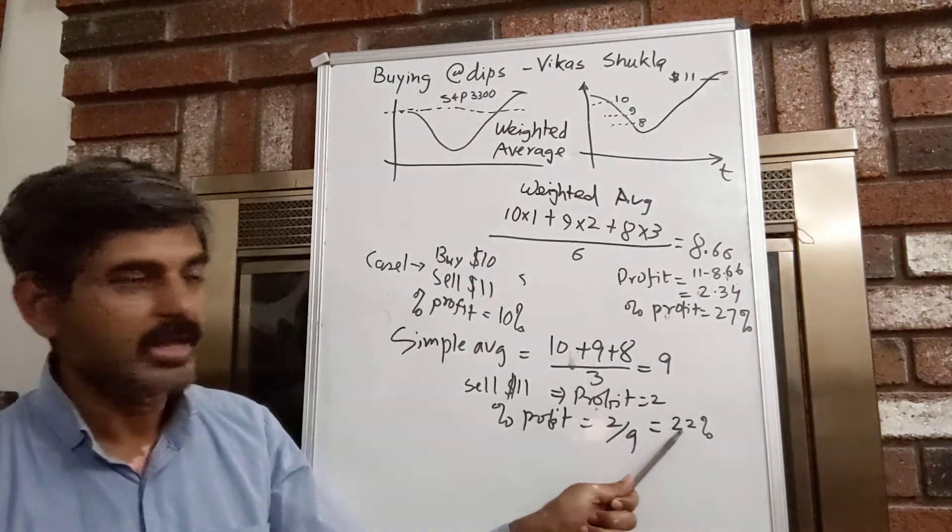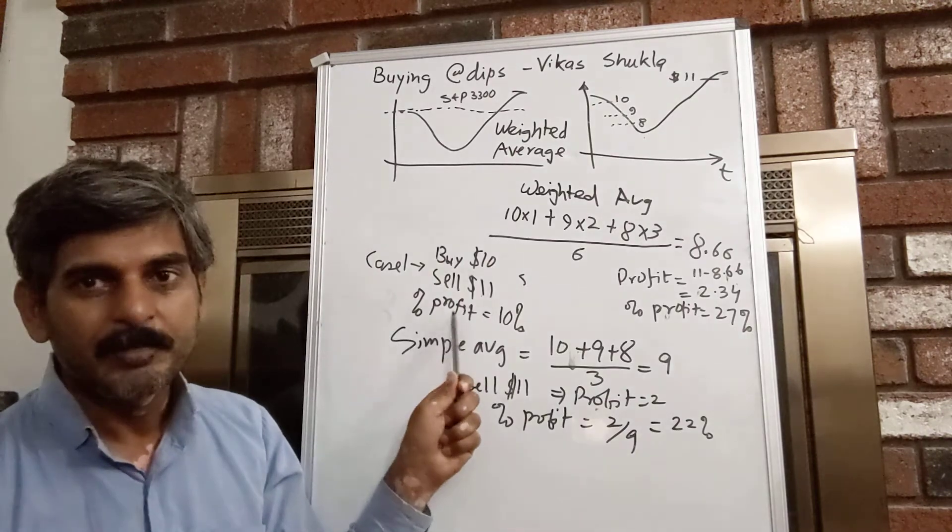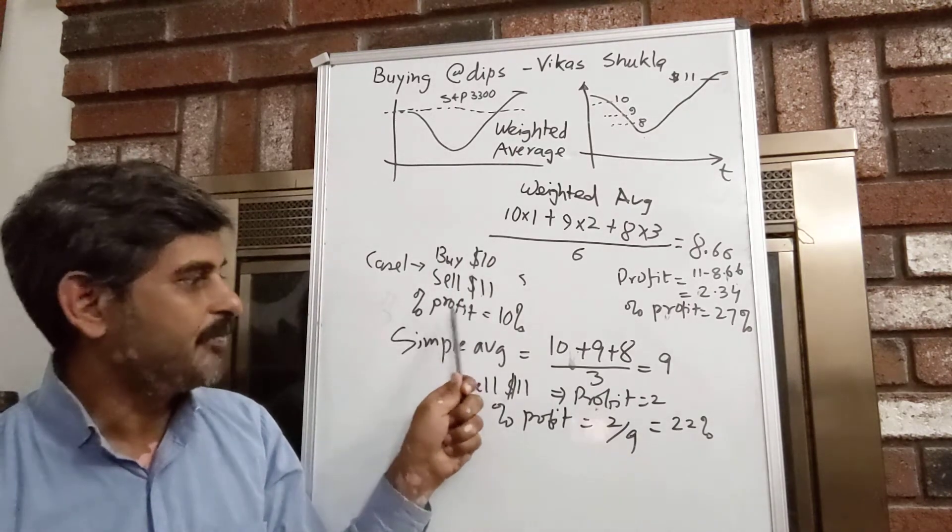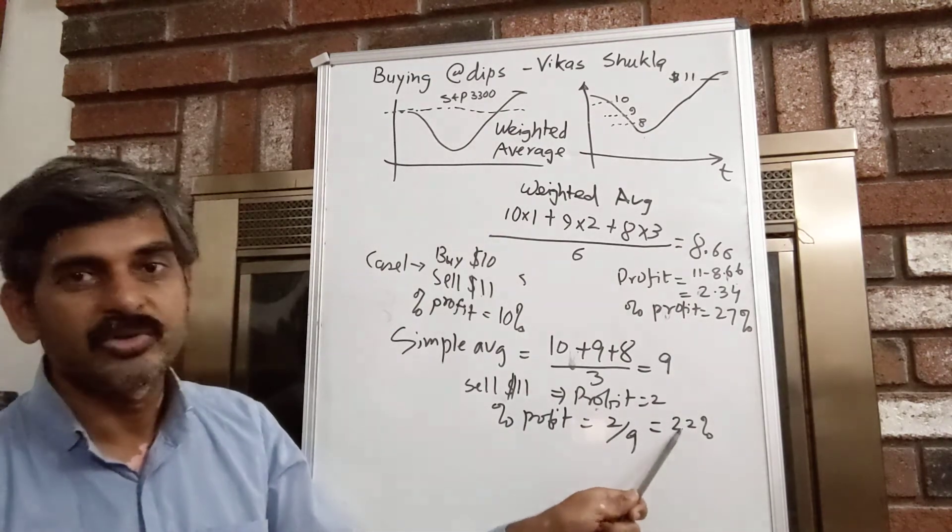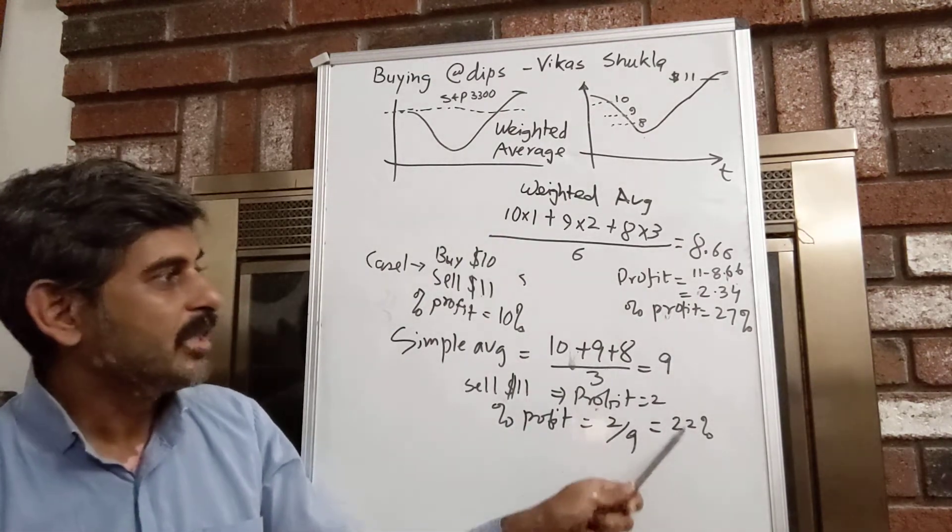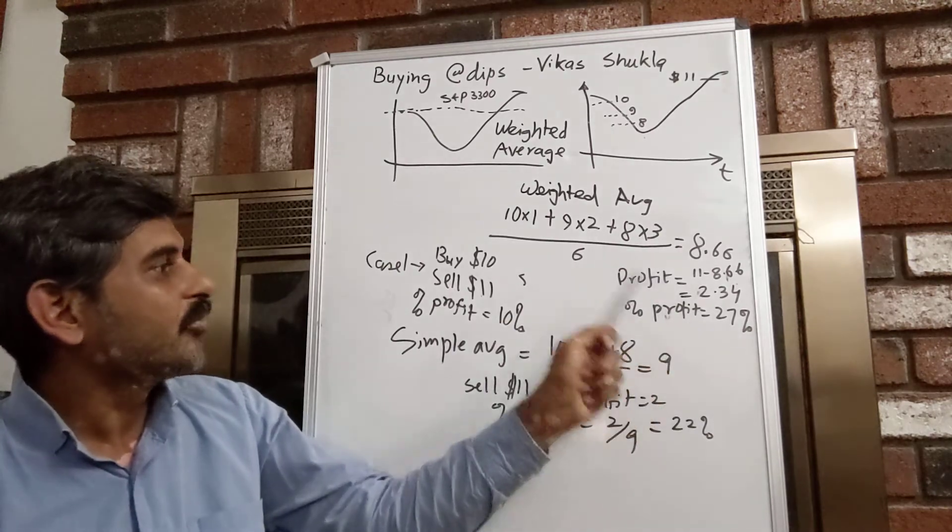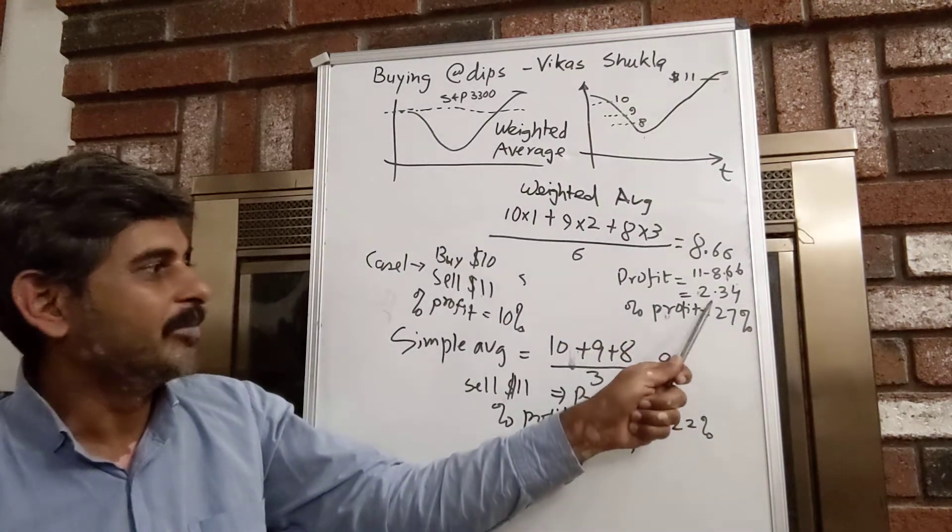And your percentage profit in that case will be 2 divided by 9 or about 22%. It is still much better than not buying the stock at the dip and then keep doing the averaging down, reducing your averaging down. But still, weighted average is still a bit better.